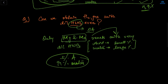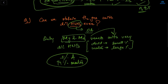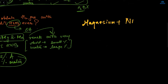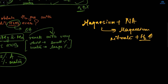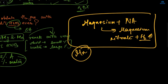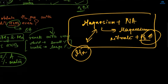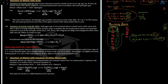So Mg and Mn — magnesium and manganese — are the only two metals that react with very dilute HNO₃. Magnesium with HNO₃ gives magnesium nitrate and hydrogen gas H₂. Manganese similarly reacts with nitric acid to form H₂ gas.